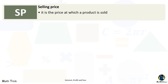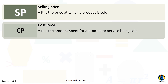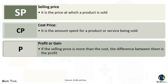Selling Price: it is the price at which a product is sold. Cost: it is the amount spent for a product or service being sold. Profit or Gain: if the selling price is more than the cost, the difference between them is the profit.